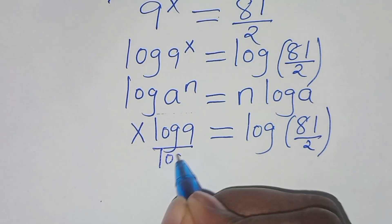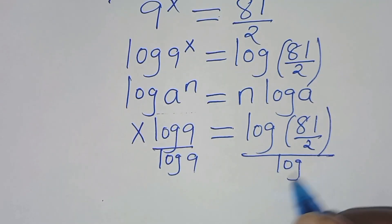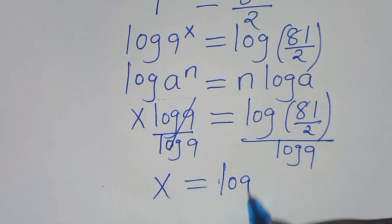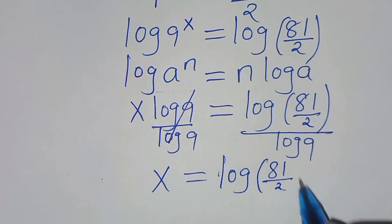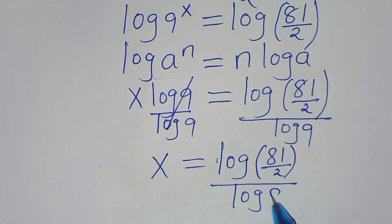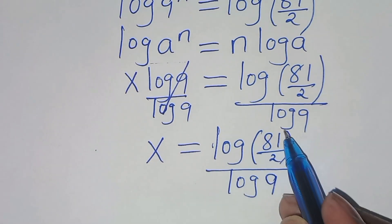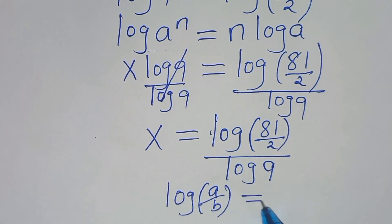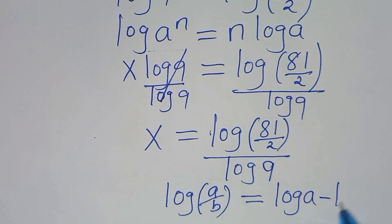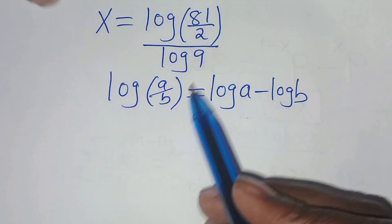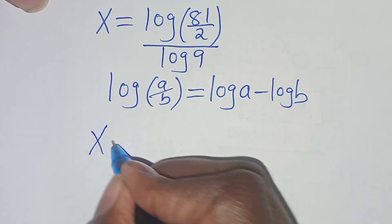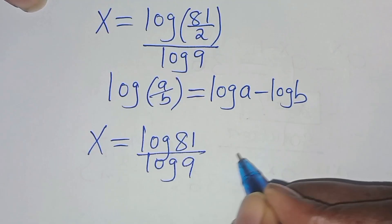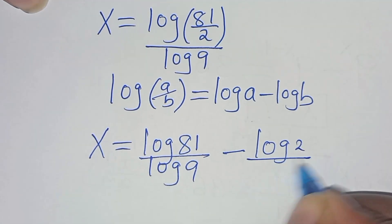The next step is to divide both sides by log 9. By simplifying, we have that x is equal to log(81/2) divided by log 9. This is in the form of log(a/b), which can be expressed as log a subtract log b. Applying this logarithm property, we have that x is equal to log 81 divided by log 9, subtract log 2 divided by log 9.